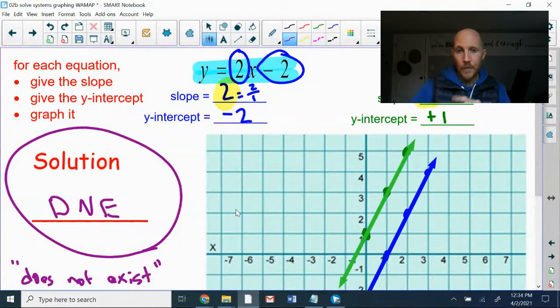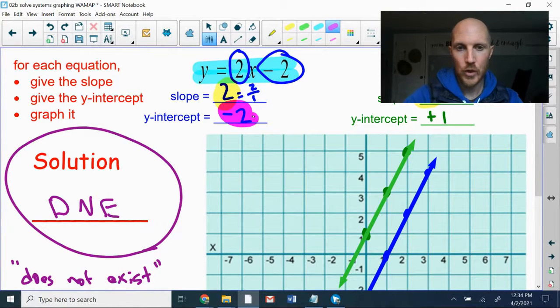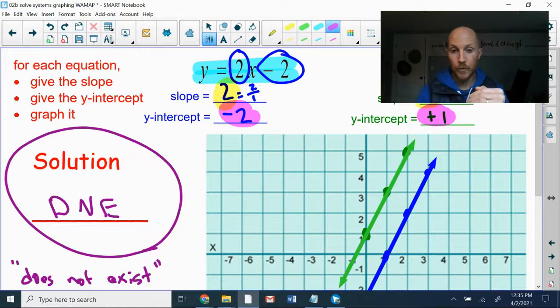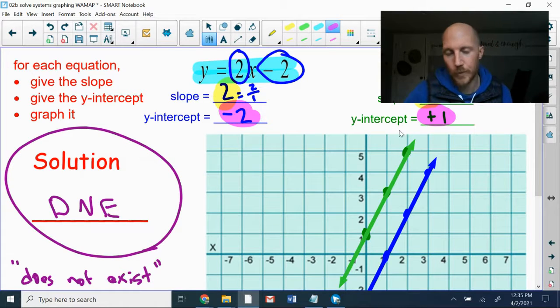So, again, recapping, the same slope showed up in both equations. And the two equations had different Y intercepts. So same slope, different Y intercept. They started in different places because of the Y intercept. They go in the same direction because of the slope. And they never crossed, making them parallel.